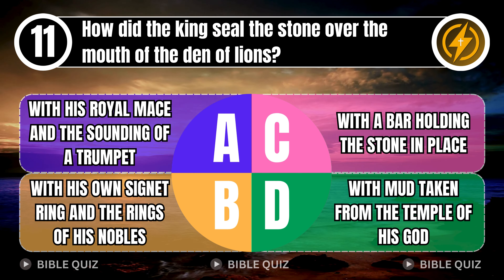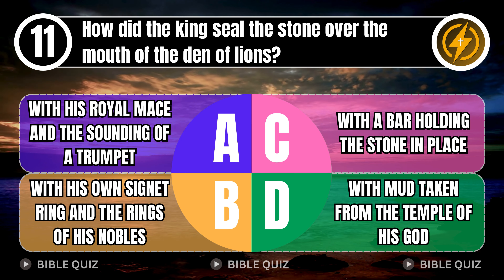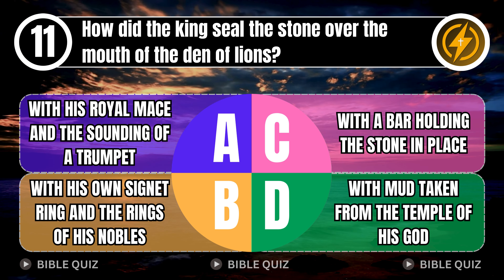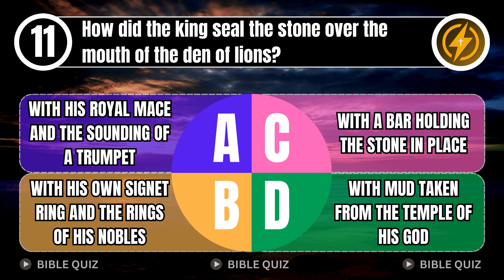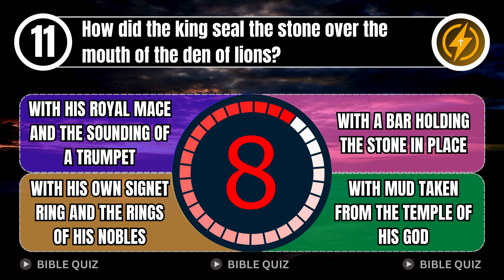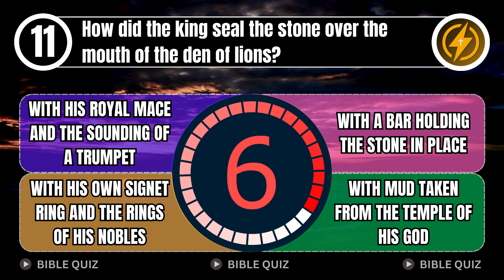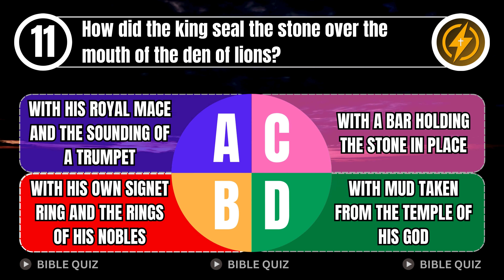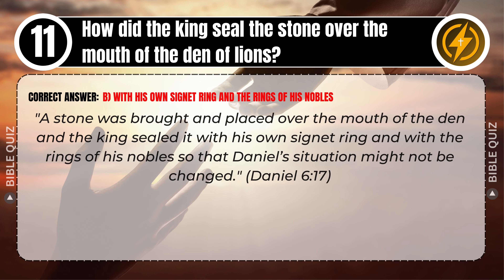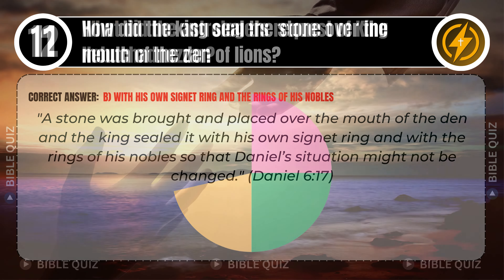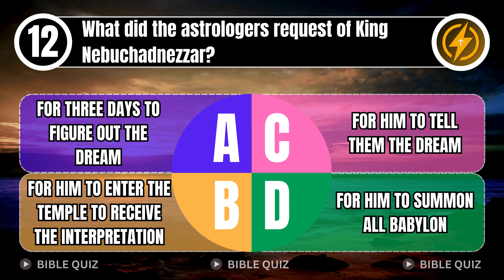Question 11: How did the king seal the stone over the mouth of the den of lions? A. With his royal mace and the sounding of a trumpet. B. With his own signet ring and the rings of his nobles. C. With a bar holding the stone in place. D. With mud taken from the temple of his god. Correct answer: B. With his own signet ring and the rings of his nobles. A stone was brought and placed over the mouth of the den, and the king sealed it with his own signet ring and with the rings of his nobles, so that Daniel's situation might not be changed. Daniel 6 verse 17.